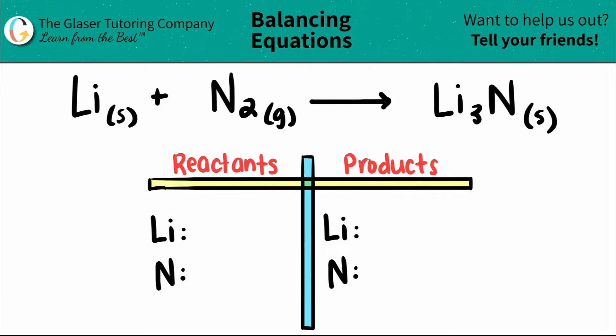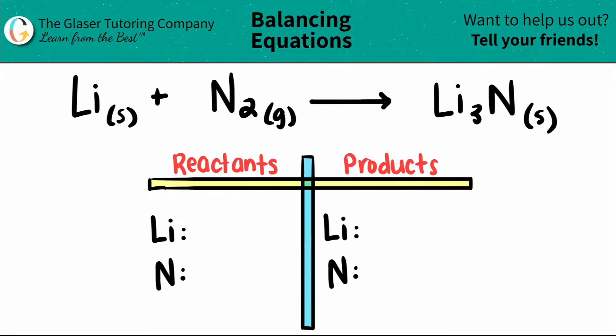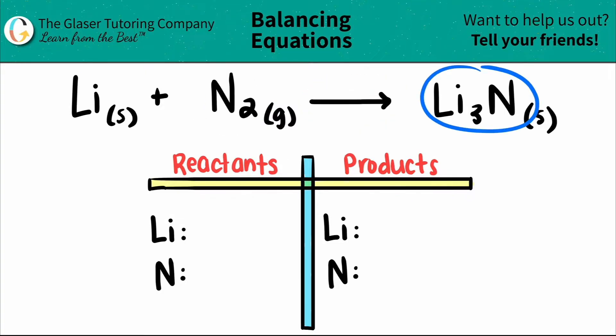Today, we're going to be balancing the equation of lithium Li plus nitrogen gas, which is N2, and that will produce lithium nitride, which is Li3N.